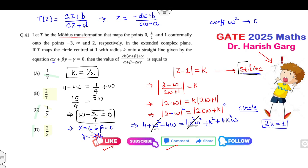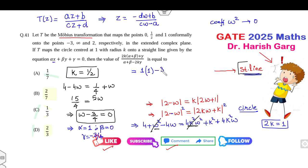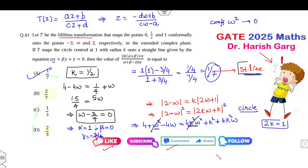Now substituting α, β, γ, and k into the given expression: the answer is 2k(α + β + γ) / (α + β − 2k·γ). With k = 1/2, α = 1, β = 0, γ = −3/4: numerator = 2·(1/2)·(1 + 0 − 3/4) = 1·(1/4) = 1/4; denominator = 1 + 0 − 2·(1/2)·(−3/4) = 1 + 3/4 = 7/4. So the answer is (1/4)/(7/4) = 1/7.